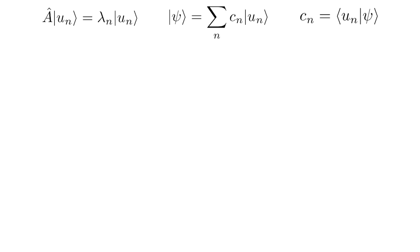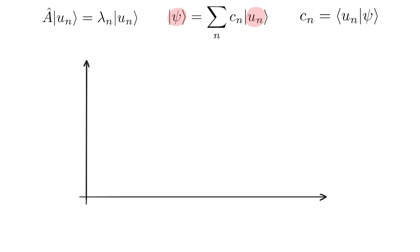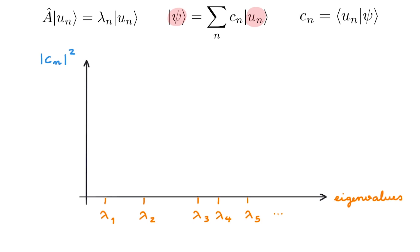Let's continue with some refreshers. We consider again the expansion of state psi in the u basis of eigenstates of some operator A. We're now going to represent the state psi in the u basis in a pictorial manner. Consider a pair of axes — on the horizontal axis we place the eigenvalues of the operator A, and on the vertical axis we place the absolute value squared of C_n. We use the absolute value squared of C_n because this square is related to the probability of getting a particular eigenvalue when we measure property A.